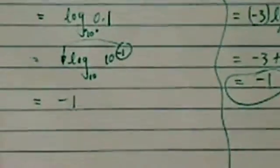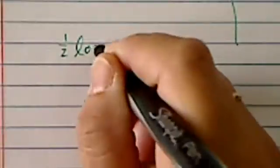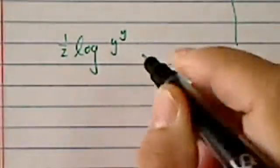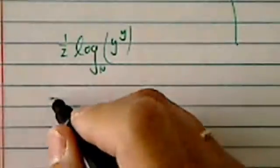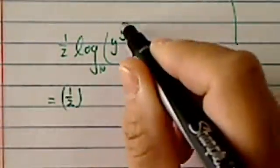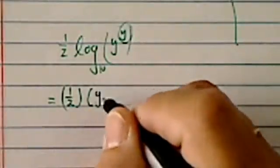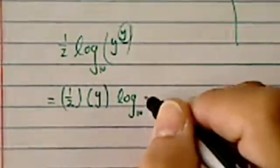Okay, let's try one more. Half log y to the y power. Okay, since the base is missing, it's going to be assumed it's 10. So it's a half. We're going to drop the hat in the front. Y log base 10 of y.